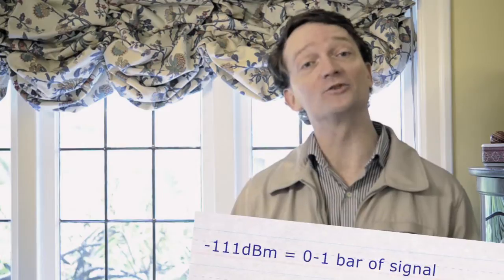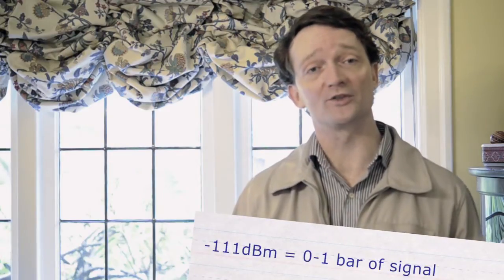Our second pre-installation signal reading is in the dining area of the home. In this area we're looking at minus 111 signal, which is even worse than outside.